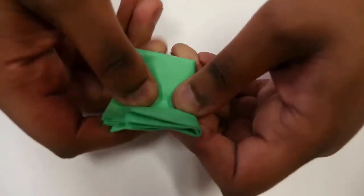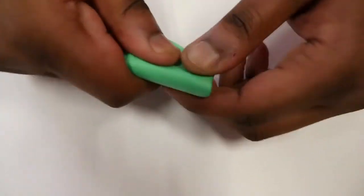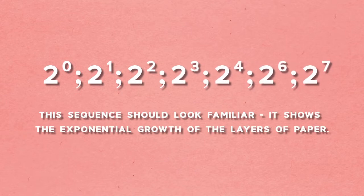A geometric sequence formed by folding the paper can explain why. The limitation on paper folding has a mathematical reasoning. Since the paper doubles with each fold, you end up with the following geometric sequence.